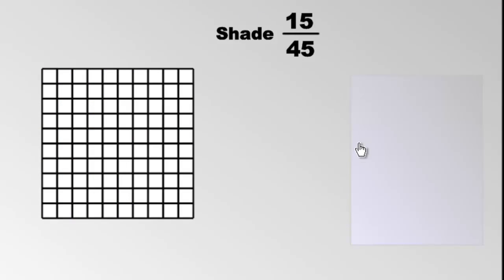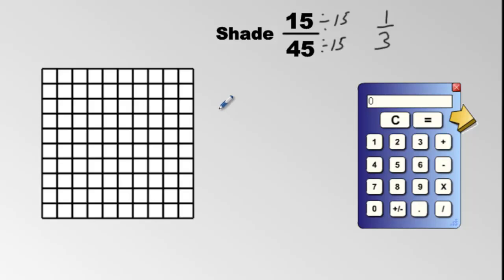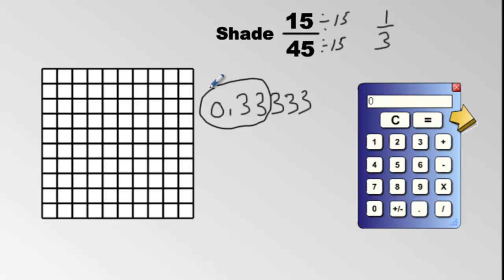When kids see a question like 15 out of 45, they rush to their calculator and go 15 divided by 45. But there are some questions you need to notice and recognize, and say to yourself: I don't need a calculator for this. You should recognize that 15/45 can be reduced to 1 out of 3. And 1 out of 3 is 0.3333... repeating. We just need the estimated amount, and the fraction for that value is 33 out of 100.